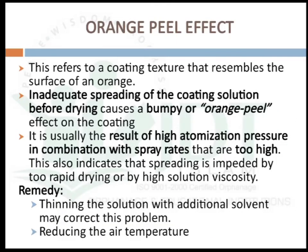The next defect is orange peel effect. This refers to a coating texture that resembles the surface of an orange. Inadequate spreading of the coating solution before drying causes a bumpy or orange peel effect on the coating. It is usually the result of high atomization pressure in combination with spray rates that are too high. This also indicates that spreading is inhibited by too rapid drying or by high solution viscosity. This problem can be rectified by thinning the solution with additional solvent or by reducing the drying air temperature.